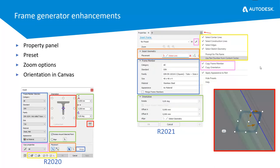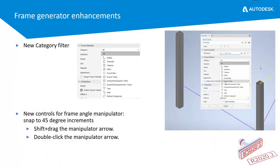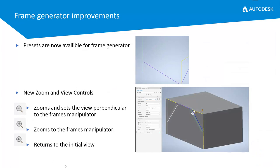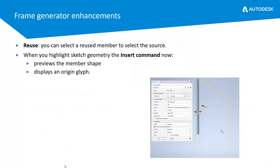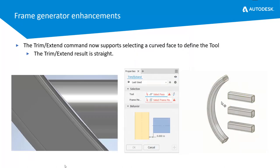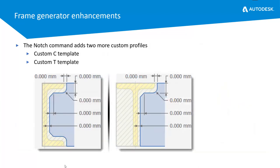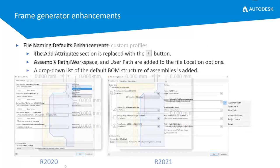Frame Generator has received a lot of attention in this release: there's a new property panel, presets, zoom options, and new in-canvas orientation. There's also a new category filter from 2020.2 letting you choose what you're looking for before selecting the member further down. Controls with a frame angle manipulator have been added, along with presets, new zoom commands, and improved tools for reuse. The trim/extend command now works with curved edges — you can extend to a curved edge and get a straight cut. Notches have been updated and file naming has been enhanced.